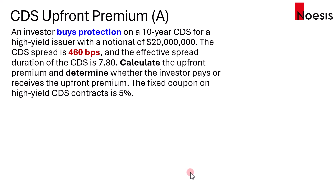For exam purposes, if it's a high-yield issuer, the fixed coupon on the CDS contract will be 5%. And if it's an investment-grade issuer, then the fixed coupon will be 1%.